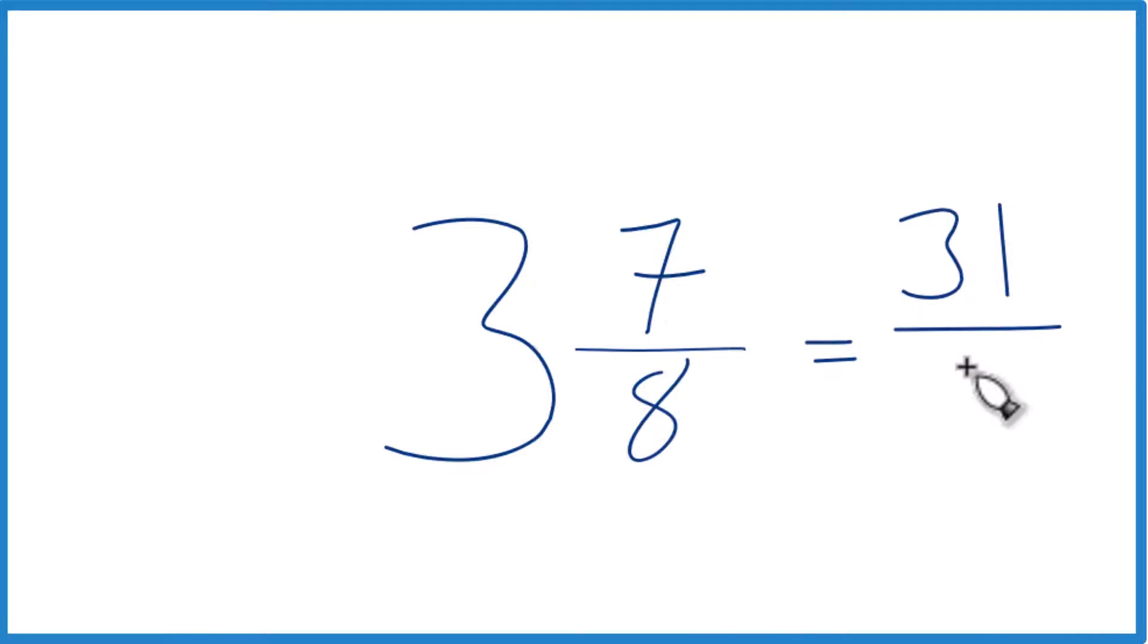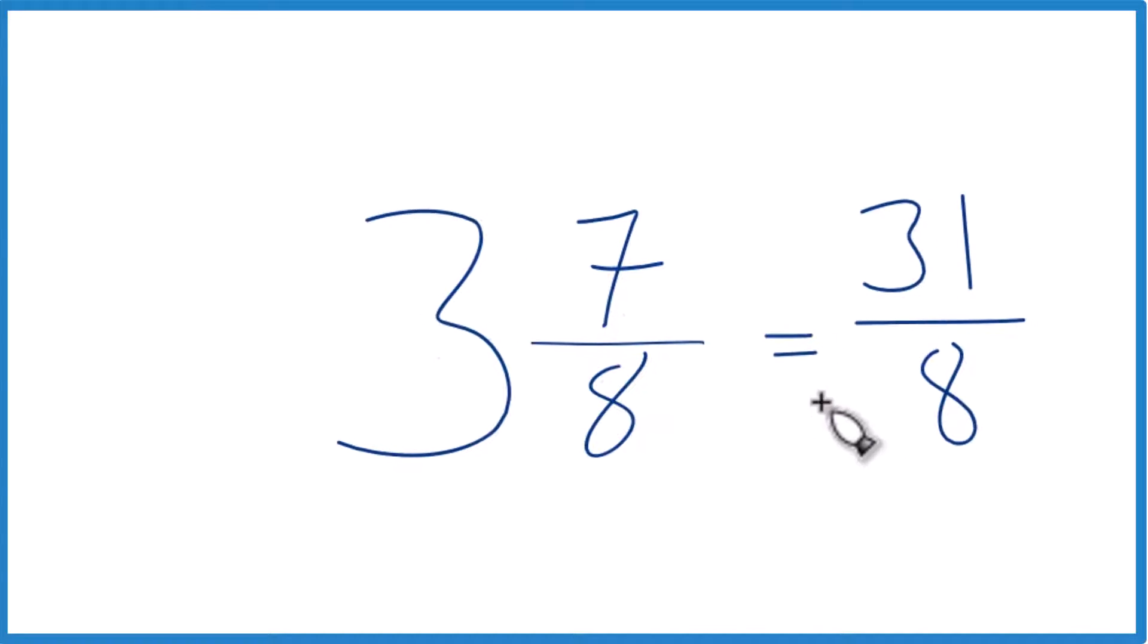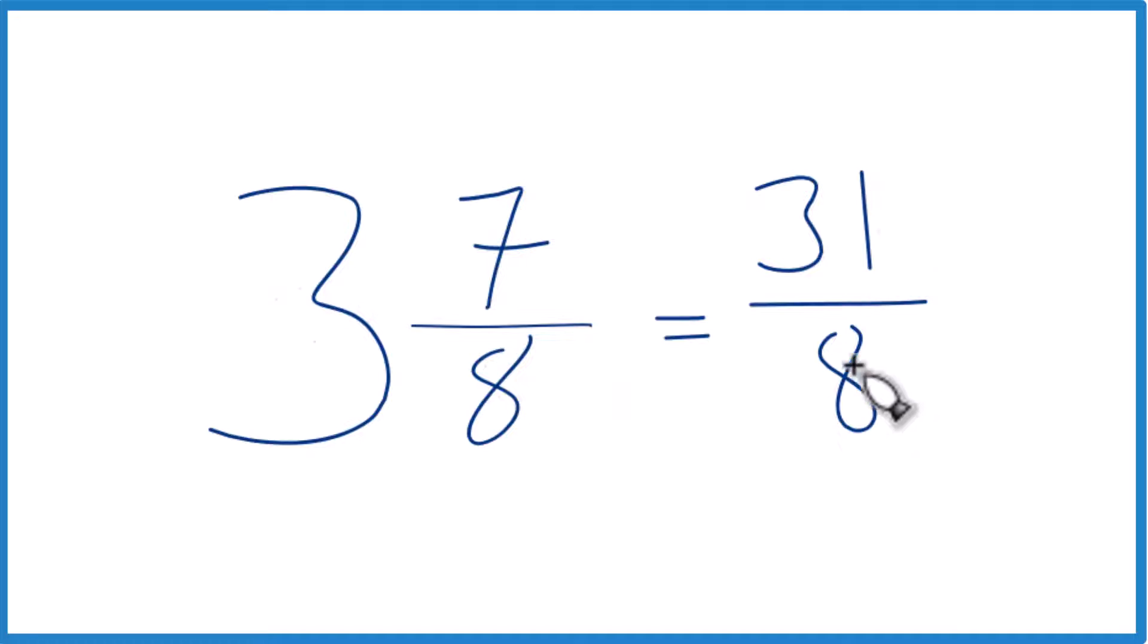Then we just bring the denominator across, and we get 31 eighths. So the mixed number 3 and 7 eighths equals 31 eighths.